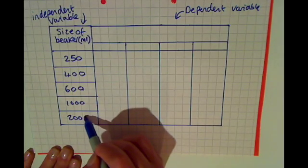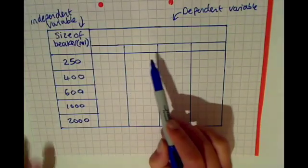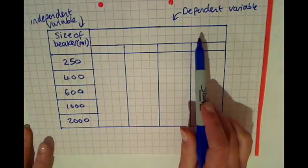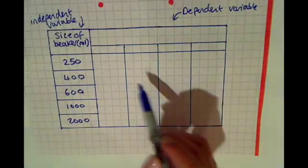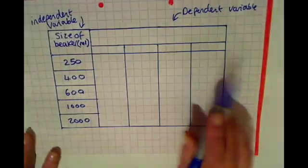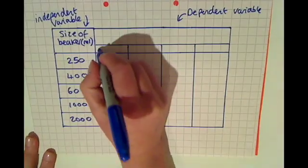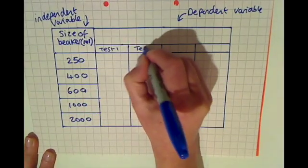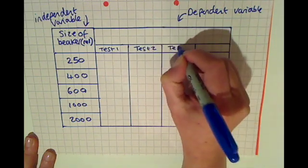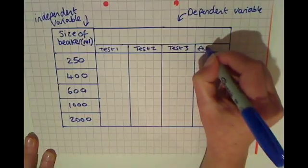So the next thing I need to do is look at the four columns which are left for the dependent variable, the thing I'm measuring. And the reason they've got four columns is because it's always good to do repeats and take an average. So I have test one here, test two, test three, and finally I've got a column.